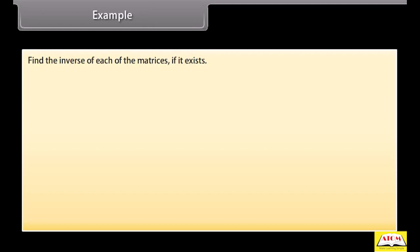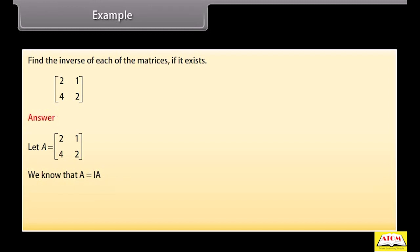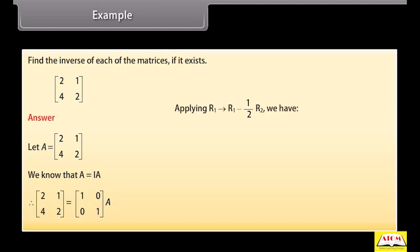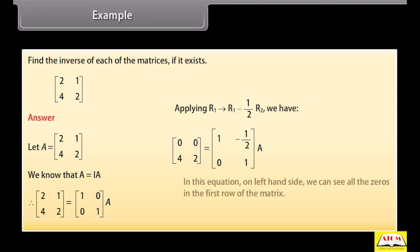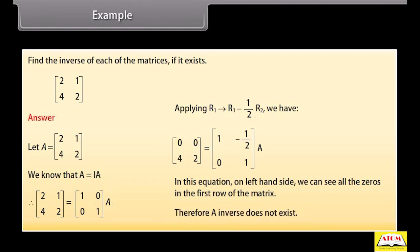Example: Find the inverse of the given matrix with rows [2, 1] and [4, 2]. Let the given matrix be A. We know A can be written as A = I·A. Applying R1 → R1 − (1/2)R2, we get the matrix with first row [0, 0] and second row [4, 2]. Since all elements of the first row are zero, A inverse does not exist.